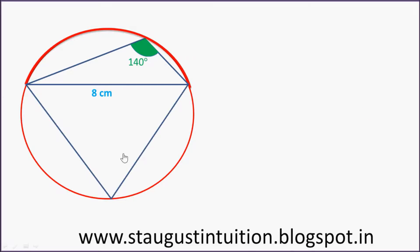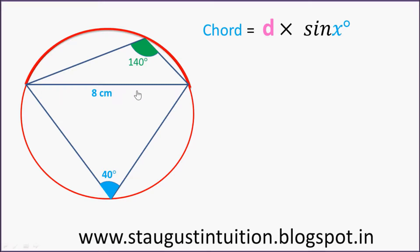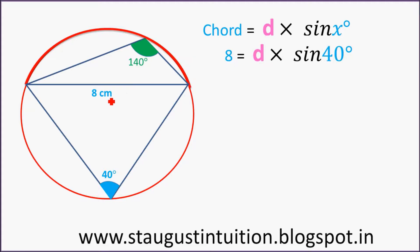If you have a triangle, you can see that the angle is 1.5. Only consider this triangle. According to the formula, this side is 8cm. So, diameter into sine is 8cm. It is equal to diameter into sine.